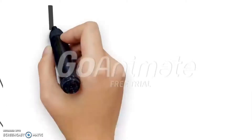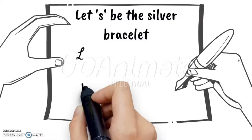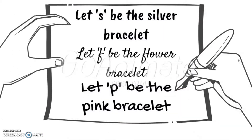First, we're going to identify the variables. Let S be the silver bracelet, F be the flower bracelet, and P be the pink bracelet.